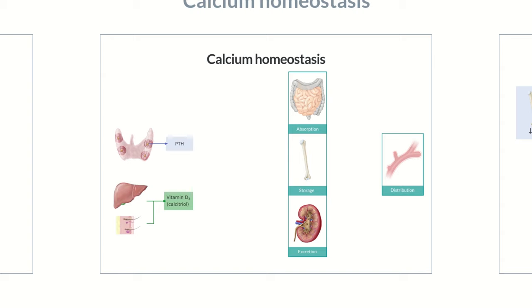A third regulator is calcitonin, which forms in the thyroid gland, though its physiological significance in regulating calcium homeostasis is likely relatively low. This assumption derives from the fact that calcitonin doesn't need to be substituted in an underactive thyroid to maintain calcium levels. However, later on in this episode, we'll see that it still plays a role in regulating blood calcium levels.